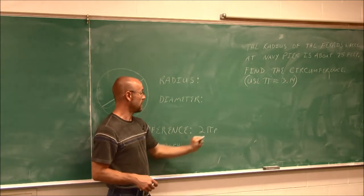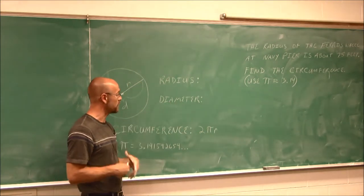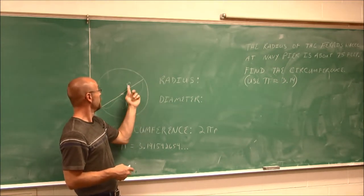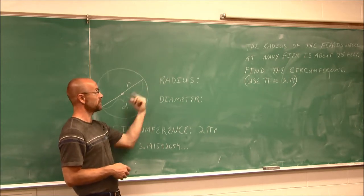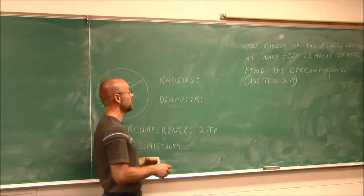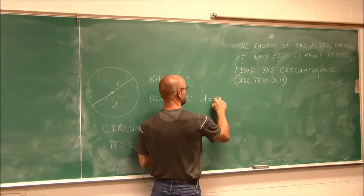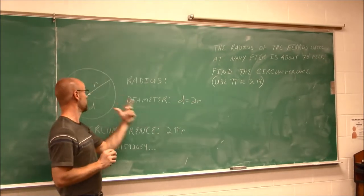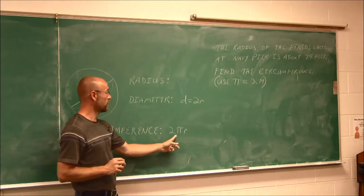2π times the radius. Now, the reason why I define diameter as well is because I want you to understand that there's a relationship between these. Radius being the distance from the center to the edge and diameter being the distance across - diameter is equal to 2r, 2 times the radius, because it's twice as much, this side and that side. So this formula, you can memorize it in terms of radius.